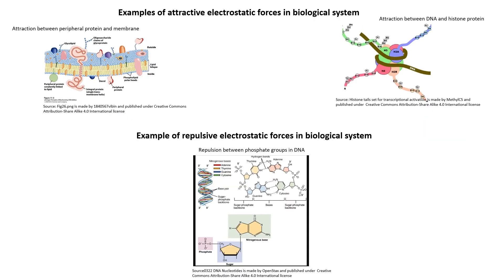Examples of attractive electrostatic forces in the biological system: first, the attraction between peripheral protein and membrane — the membrane is a lipid bilayer, a non-polar environment, so the protein interacts with these lipids via electrostatic interaction. Second, the attraction between DNA and histone protein — the charge on DNA is negative, while the charge on histone is positive, so they attract each other.